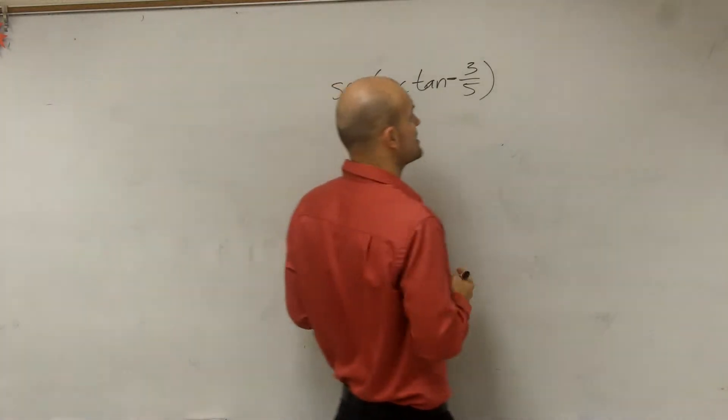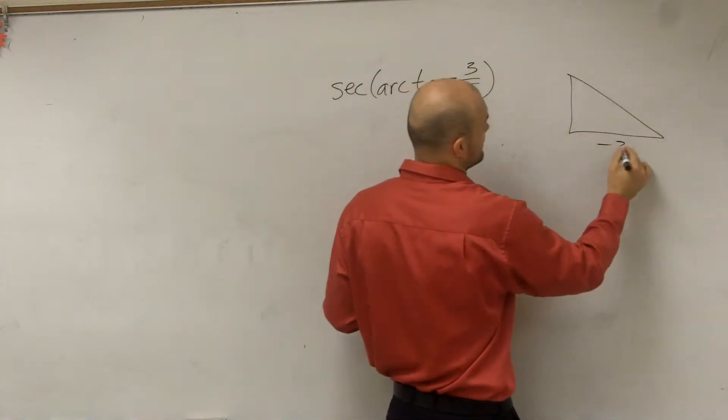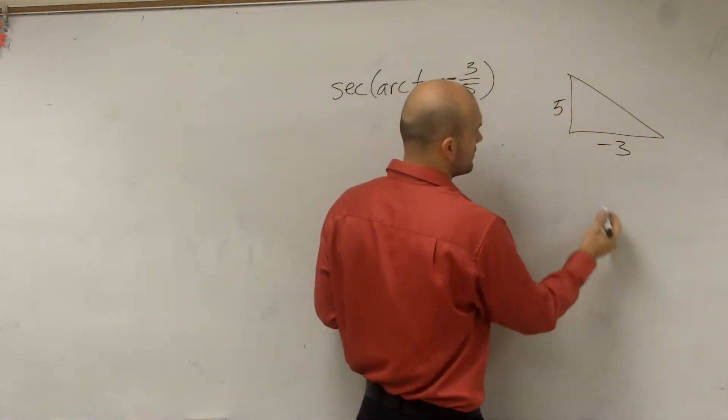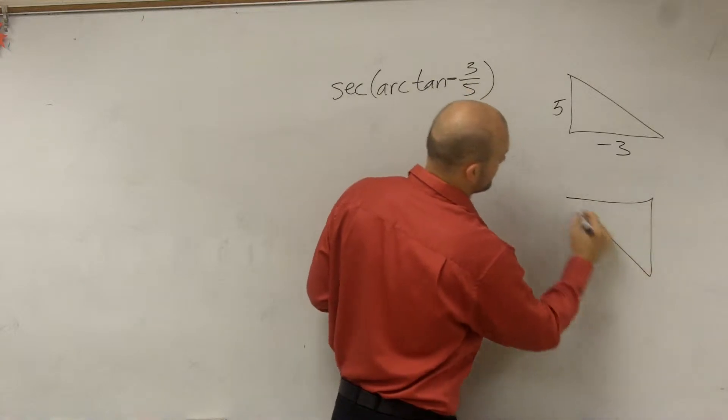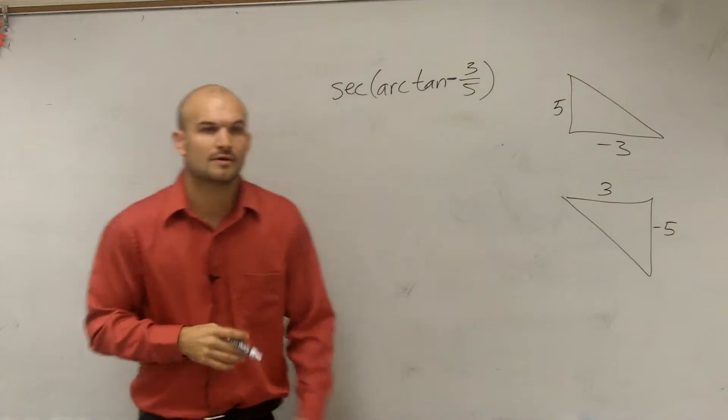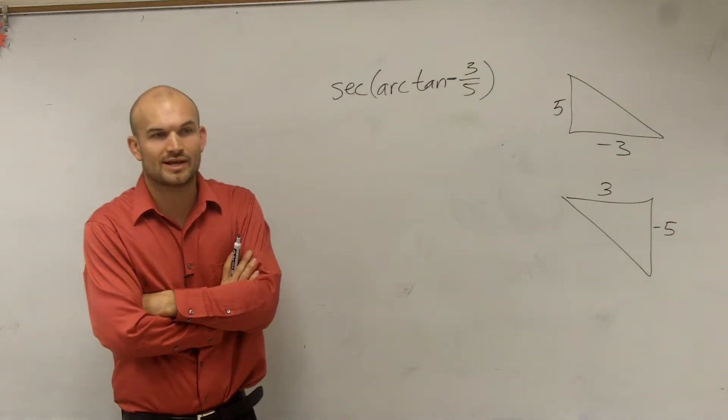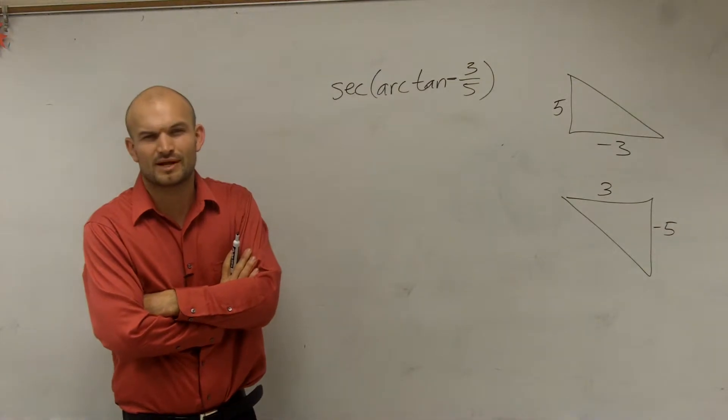So let's look at a couple different angles that we could have if it would be this way. Well, one, we could have a negative 3, positive 5, or we could have a positive 3, negative 5. Now, Kelly, what do you think, which one would fall within the range of tangent, if you can remember the range of tangent? Which one of those, if I was going to plot them on a standard coordinate grid? Which triangle?